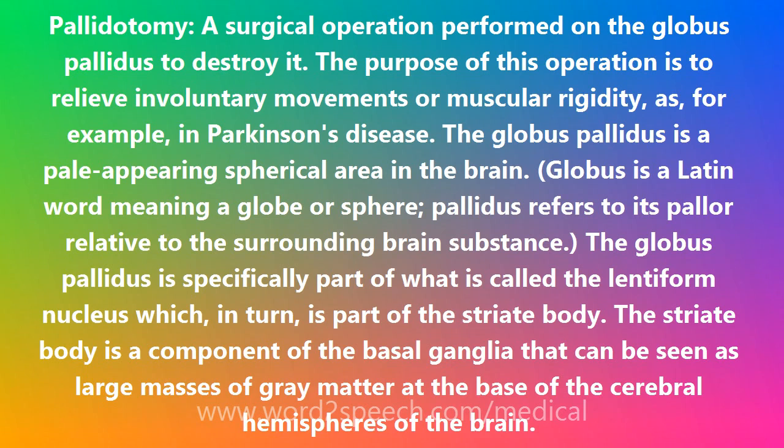The globus pallidus is specifically part of what is called the lentiform nucleus which, in turn, is part of the striped body. The striped body is a component of the basal ganglia that can be seen as large masses of grey matter at the base of the cerebral hemispheres of the brain.